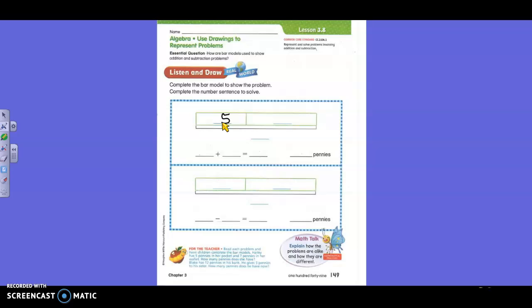In the smaller bar, right? The smaller bar. She has seven pennies in her wallet. Is seven bigger than five? Yes. Is the second bar bigger than the bar that number five is in? Yes. Yeah, it's a little bigger, isn't it? So seven will go here.